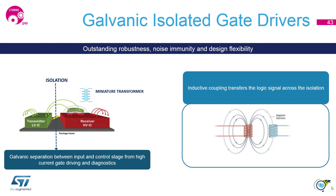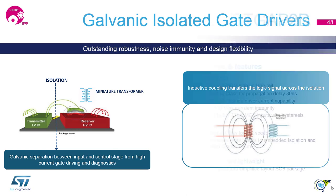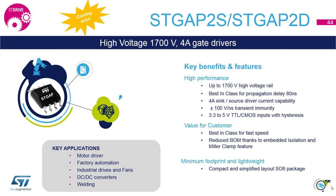ST has developed a manufacturing process to integrate an on-chip transformer consisting of metal spirals and silicon oxide insulation. The on-chip transformers transmit switching information between input and output chips which are galvanically isolated, giving great immunity against noise and high robustness. Our new STGAP2 is currently in development but samples are already available. It features up to 1.7 kV isolation with up to 4 A sink and source capability, and a well-focused set of functions for motor control applications.